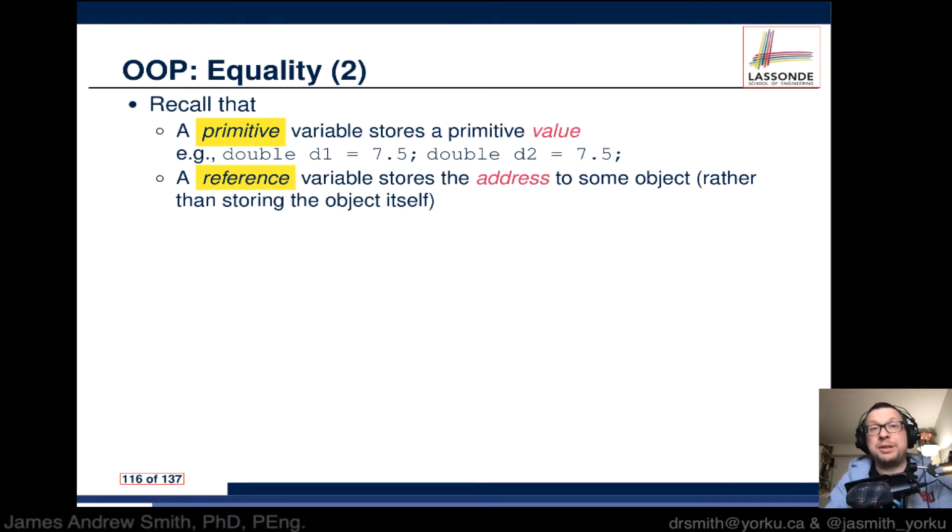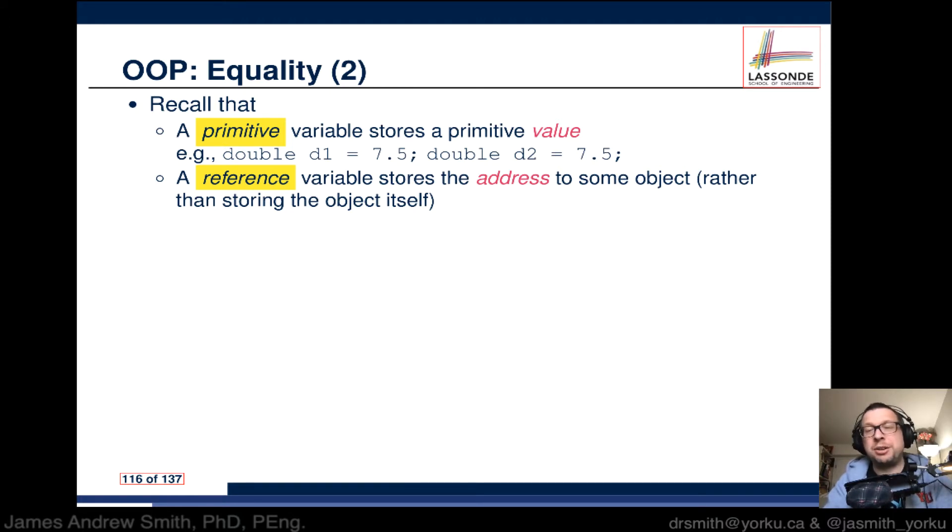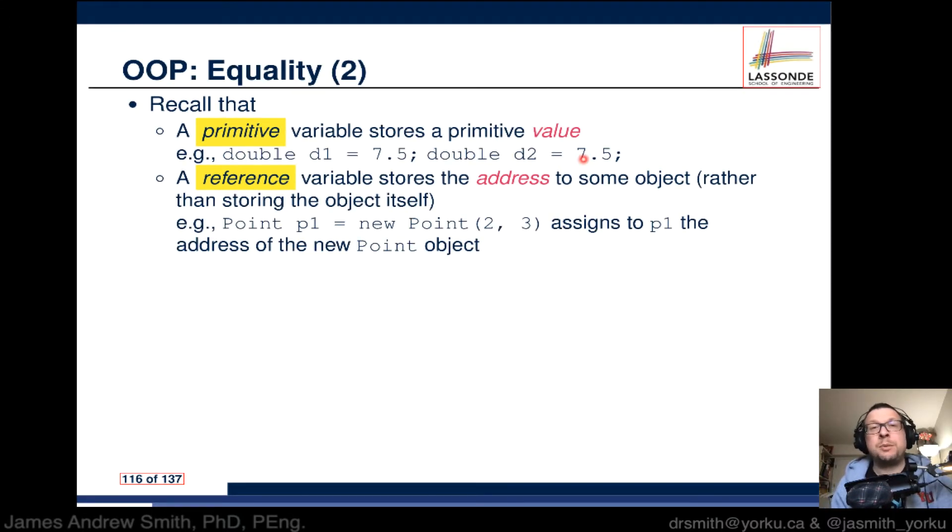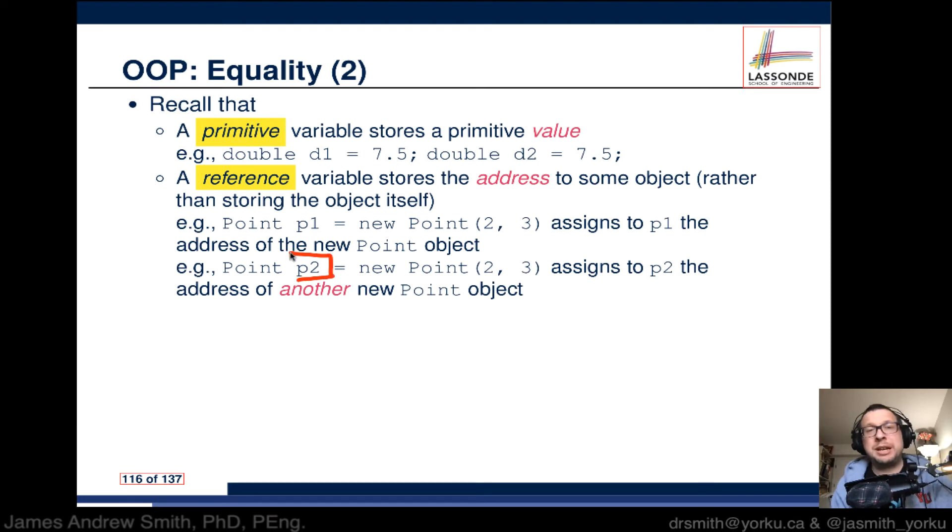On the other hand, a reference variable stores the address to some object rather than being the values in the object itself - it's the address, the location of that object. So when we say that we've got a point with values two and three in it and we call that point p1, what we're doing is we're assigning to p1 the address of a new point object, the location of that object in memory. Same with p2 - p2 is a separate object, it is not the same object as p1. It has the same values in it coincidentally, but it's not the same object.